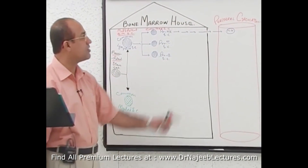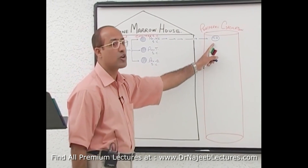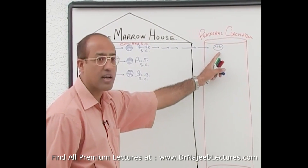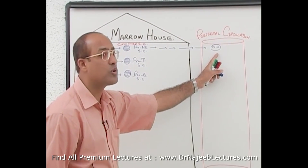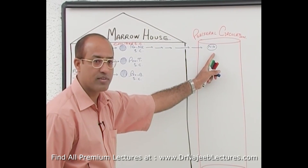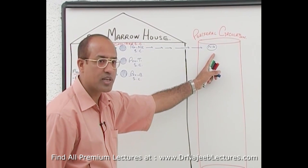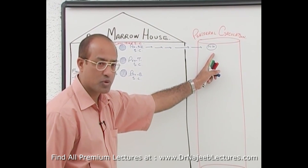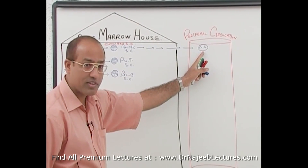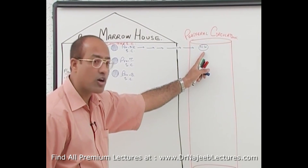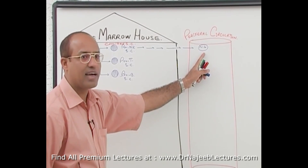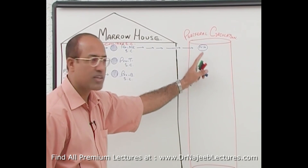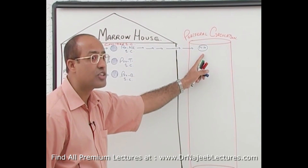Natural killer cells are a very special type of lymphocyte — they are not B lymphocytes and not T lymphocytes, because they do not have the markers of either. B lymphocytes have CD19 and CD20 proteins, but natural killer cells are not having CD19 or CD20, meaning they are not B cells. And unlike T cells, which have CD3, natural killer cells do not have CD3 proteins.